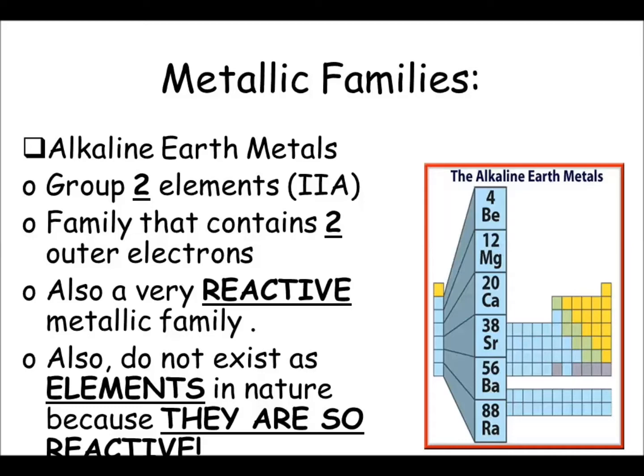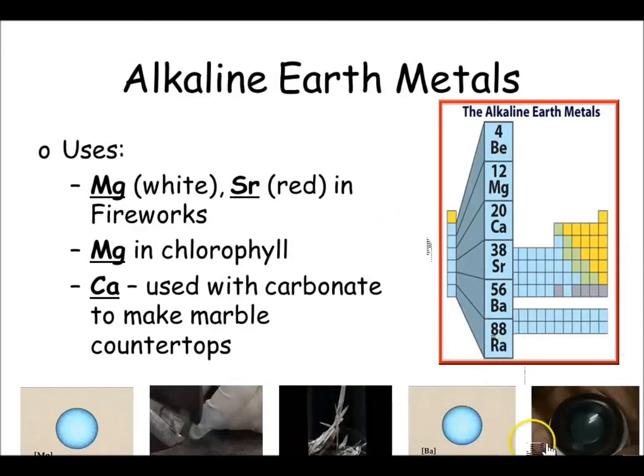So they're always going to be found in compounds. Some uses for alkaline earth metals: magnesium is white and strontium is red in fireworks. Magnesium is also found in chlorophyll, and calcium is combined with carbonate to make marble, which we use for countertops in our kitchen.